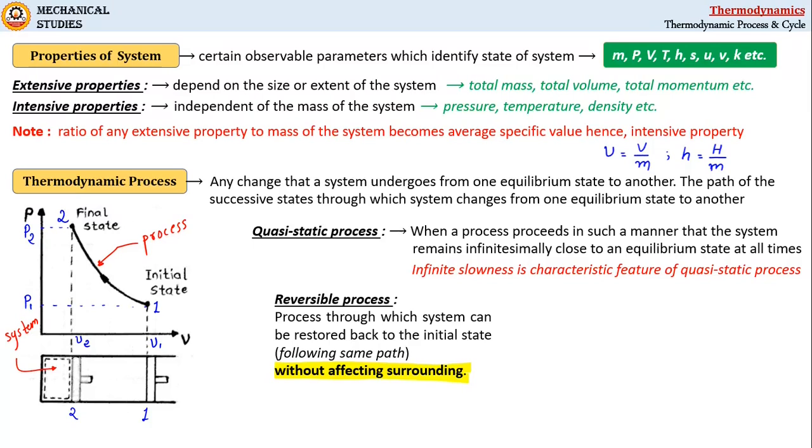Reversible process is impossible to achieve in reality and I will tell you why with a simple example. Let's consider water flowing through a pipe connected to two tanks—tank A and tank B—separated by an elevation difference.